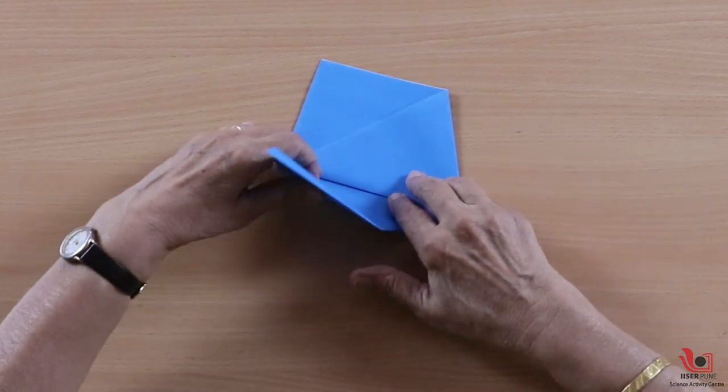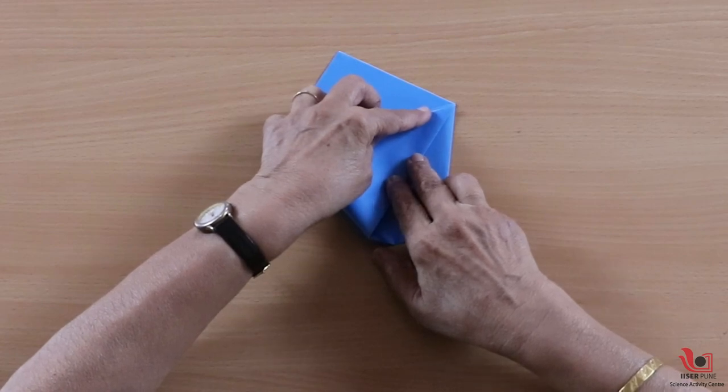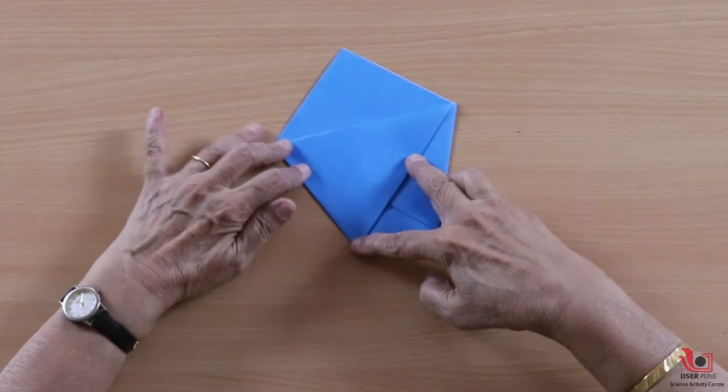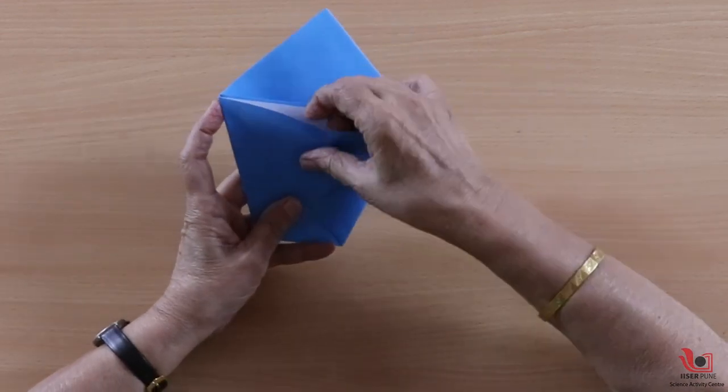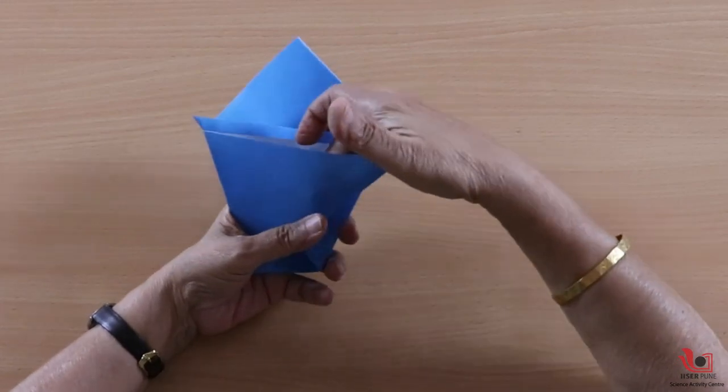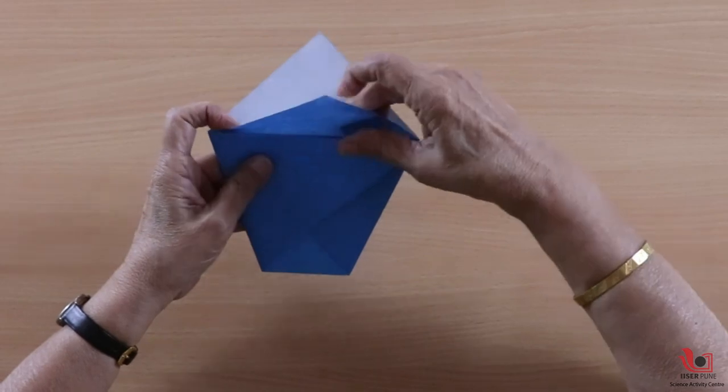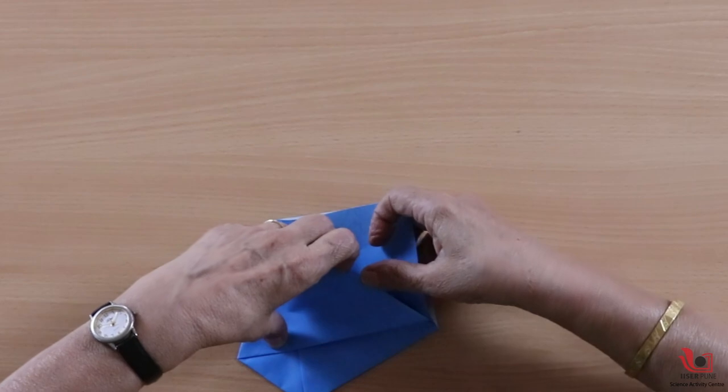Then again I will join this corner to this corner and make a firm crease. Now you will realize that I have got a pocket over here. And now what I will do is take the upper part and fix it in that pocket.